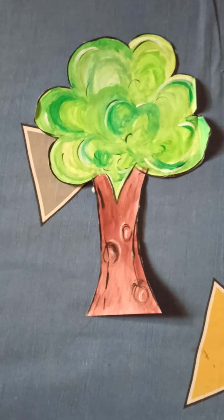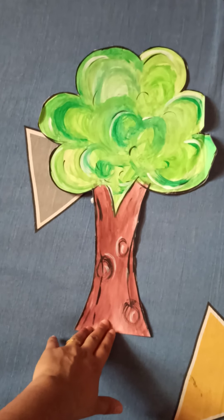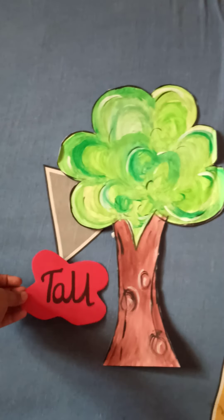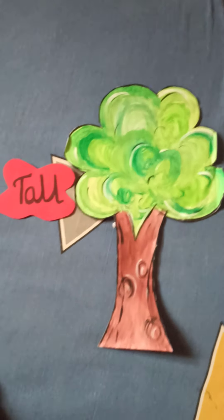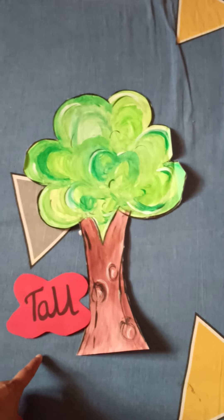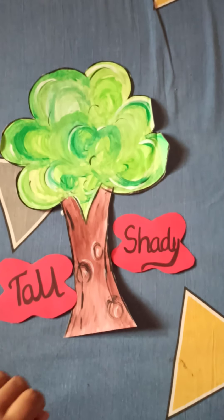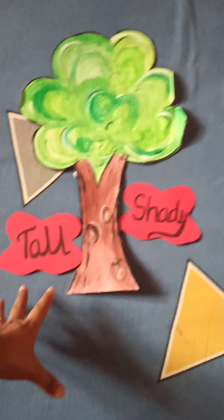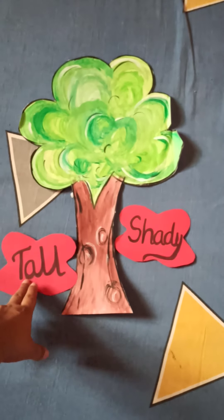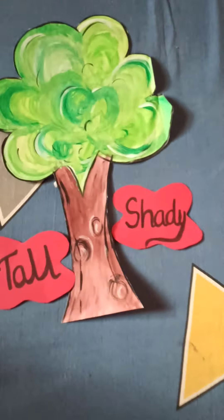So tree is a noun. Now students, can you tell me something about this picture? This tree is very tall. Along with the tallness, this tree is very shady — it gives us shade. So this tree is very tall and very shady. This is a noun, and tall and shady are the describing words.